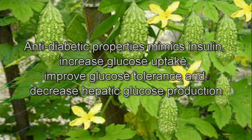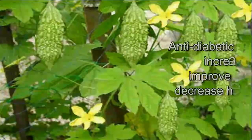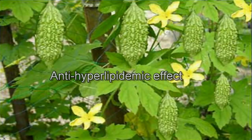Bitter Melon possesses anti-diabetic properties. It mimics insulin, increases glucose uptake, improves glucose tolerance, and decreases hepatic glucose production. Additionally, bitter gourd has an anti-hyperlipidemic effect.